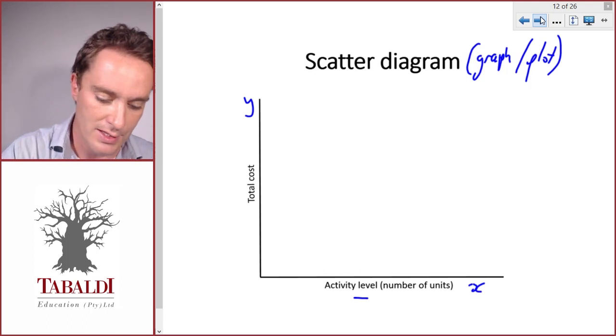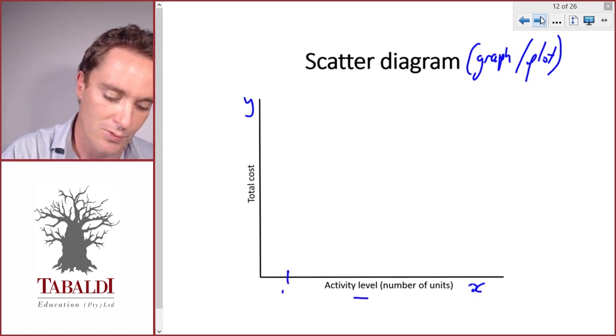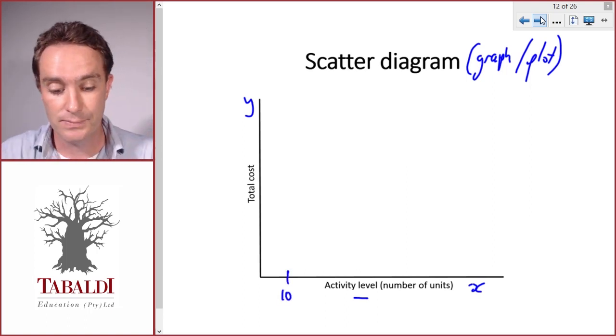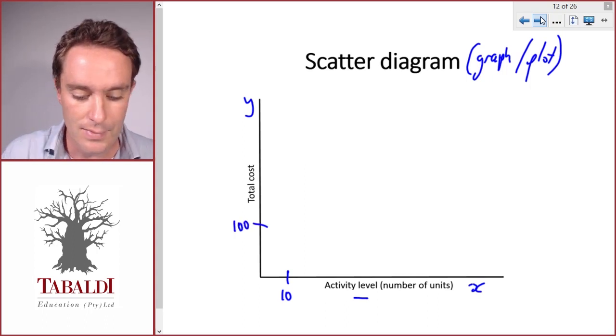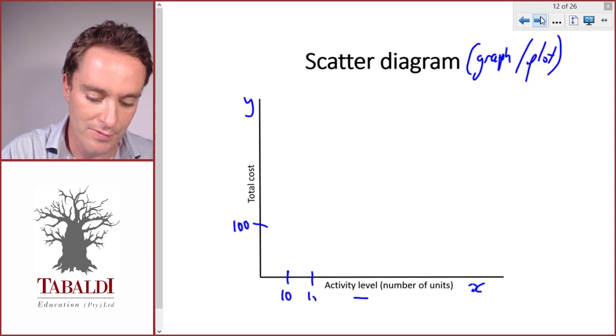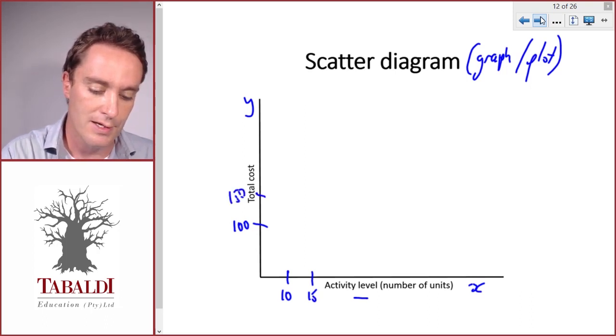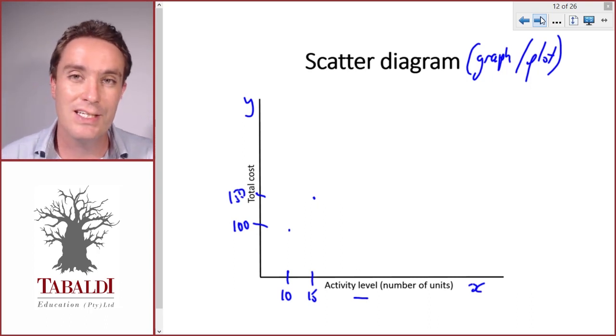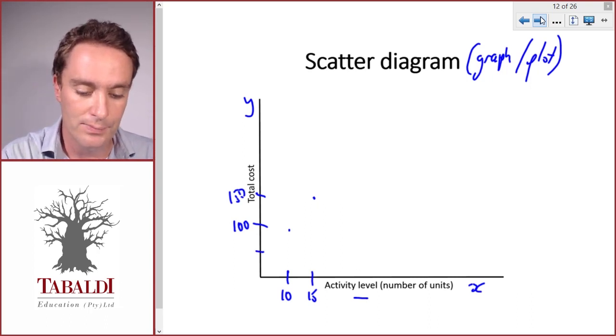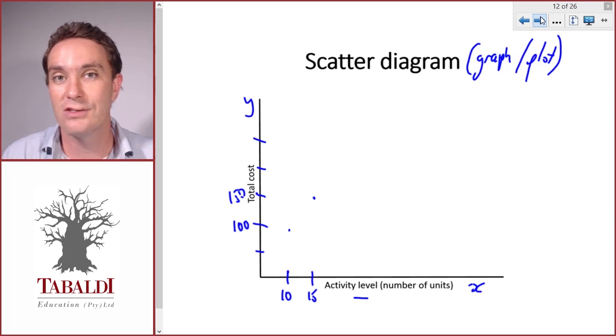So if we plot on this graph, say in the first year we made 10 units and that cost us 100, and then the next year we made 15 units and that cost us 150. We can plot these points on the graph. Now obviously you need to draw this very carefully and on scale, otherwise you won't be able to read meaningful information from it. The more accurate you draw the graph, the more accurate your information will be.